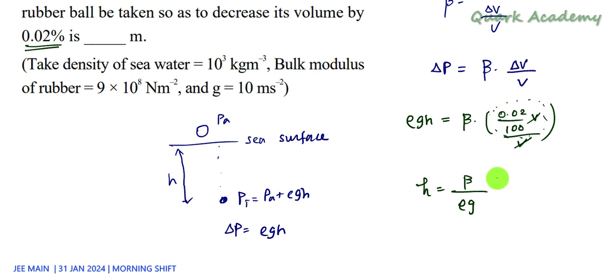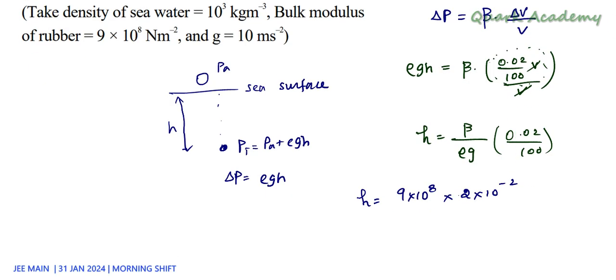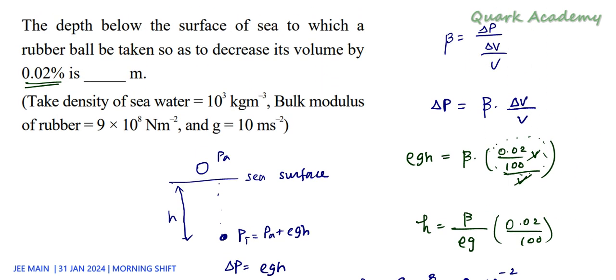So let's substitute everything. All the information is given. Beta is 9×10^8, and this we can write as 2×10^(-2). ρ is 10^3, g is 10, and 100 is 10^2. So we get 18 meters. So the depth should be 18 meters.